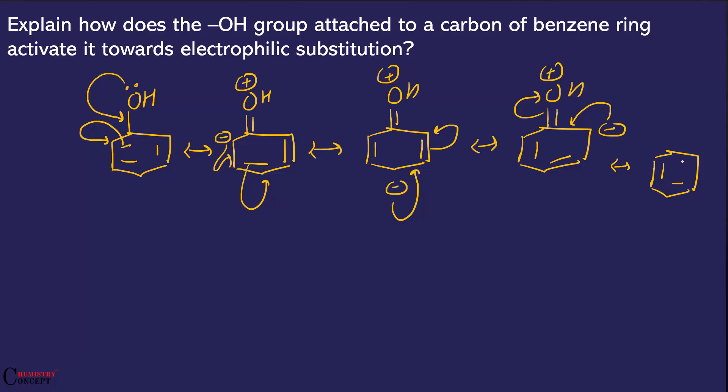Ab dekho, agar aapne yaha pe dekhao, dekho. In electrophilic substitution reactions, jo attack karta hai benzene ko, wo bhi ek electrophile hota hai - electron loving species. Ab electron loving species ko kya chahiye? It loves the negative charge.